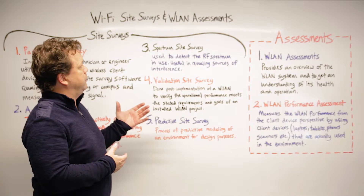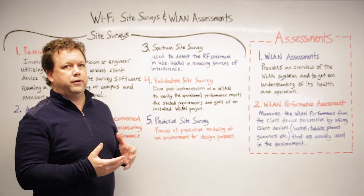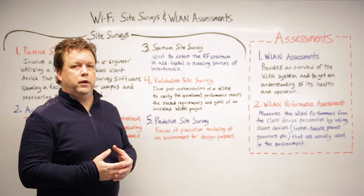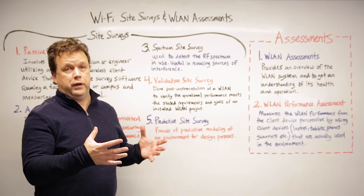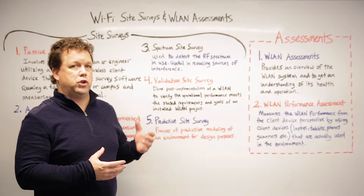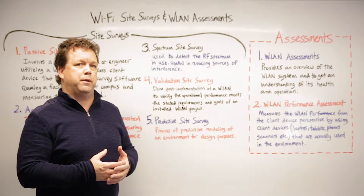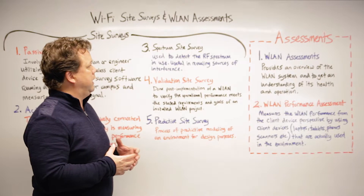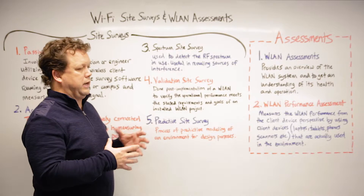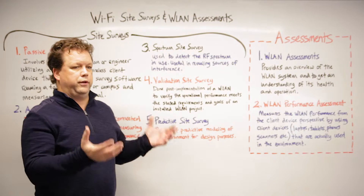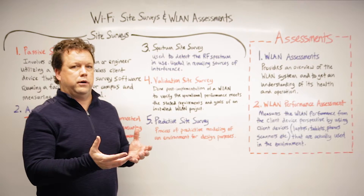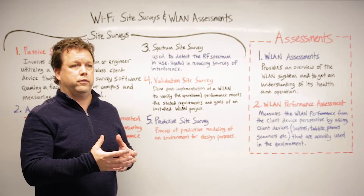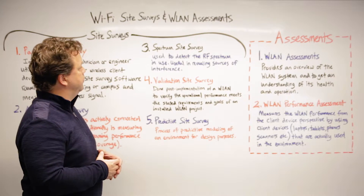The next type is a spectrum site survey. A spectrum site survey is used to detect sources of RF interference within a given space. It can be done in conjunction with the active and the passive site surveys, and it allows us to get a holistic view of what's going on in the wireless space within a given area.